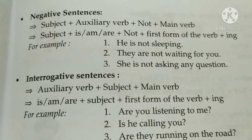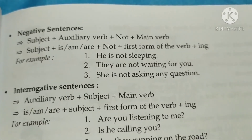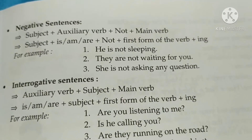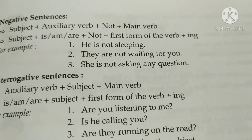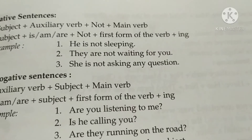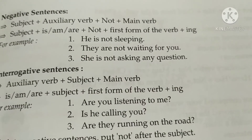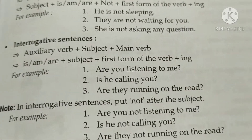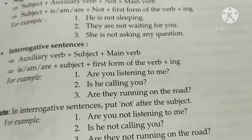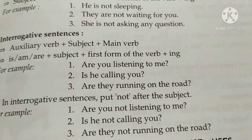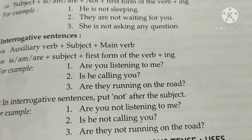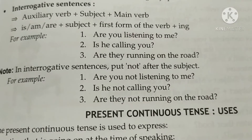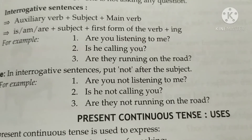For a negative sentence in present continuous: Subject + is/am/are + not + main verb + ing. Examples: 'He is not sleeping,' 'They are not waiting for you,' 'She is not asking any question.' For an interrogative sentence: Auxiliary verb + subject + main verb + ing. Examples: 'Are you listening to me?' 'Is he calling you?' 'Are they running on the road?'